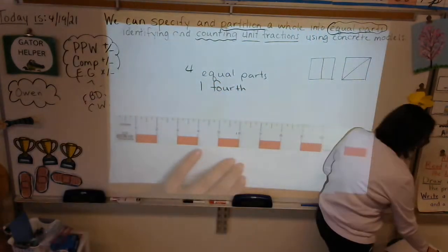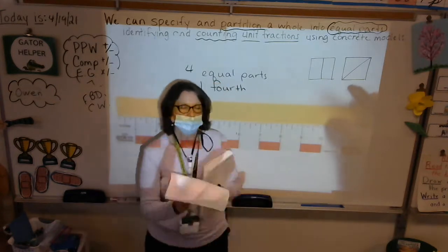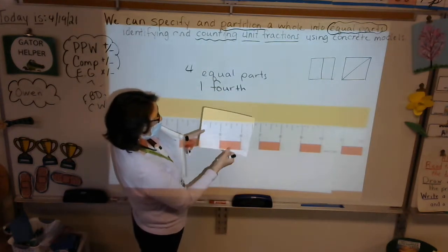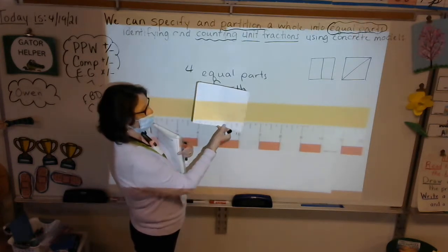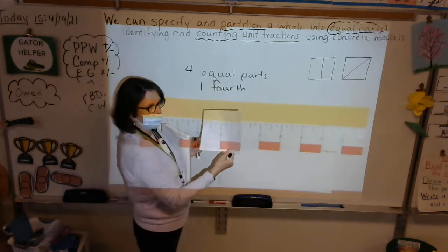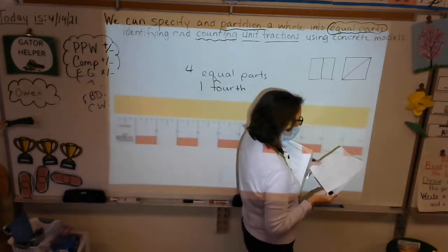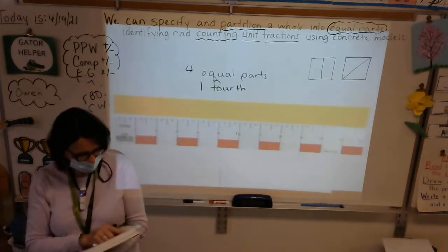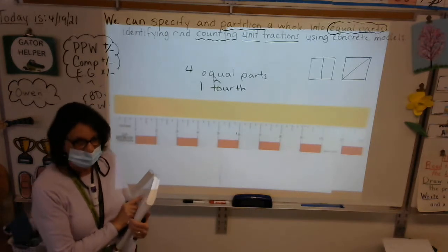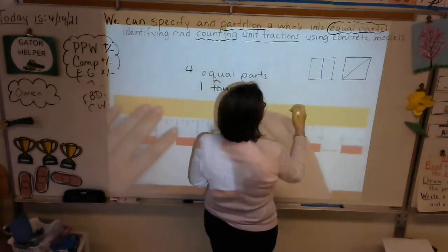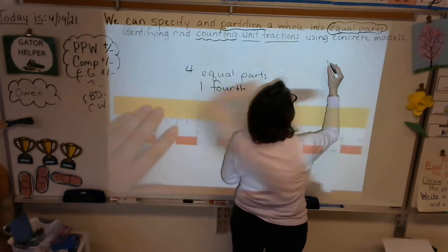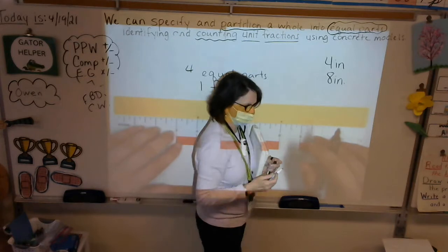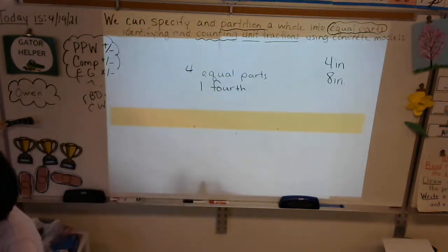Friends at home, you will have a template on Seesaw. The first one shows halves; this next one you'll draw additional lines at three inches and nine inches, giving four equal parts each called one fourth. Now take your next strip, put your ruler against it, and put lines at four inches and eight inches. Once you've marked them, draw your lines with your ruler.